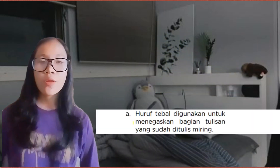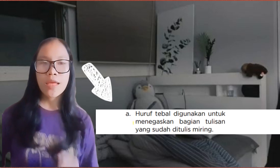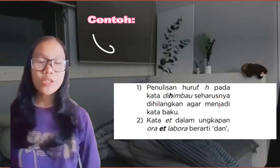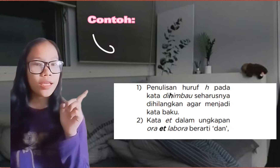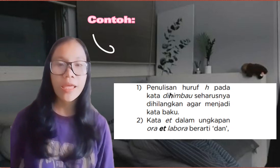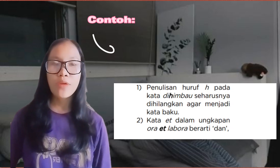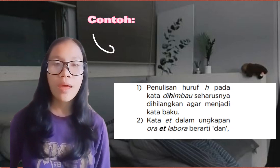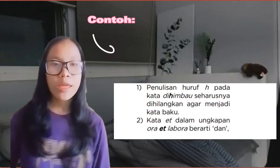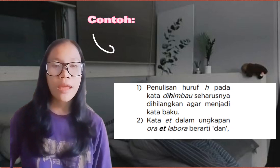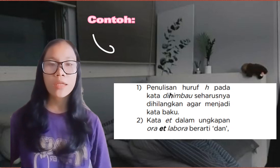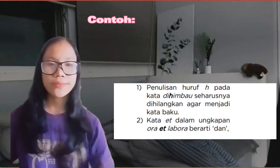Yang pertama, huruf tebal digunakan untuk menegaskan bagian tulisan yang sudah ditulis miring. Contohnya: yang pertama, penulisan huruf H pada kata *dihimbau* yang seharusnya dihilangkan agar menjadi kata baku, yaitu *dihimbau*. Yang kedua, kata *et* harus ditebalkan karena dalam ungkapan *ora et labora* kata tersebut berarti 'dan'.